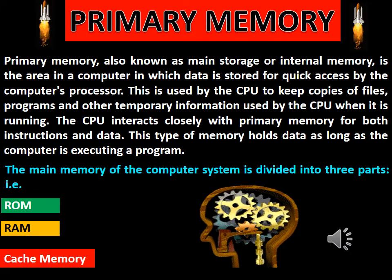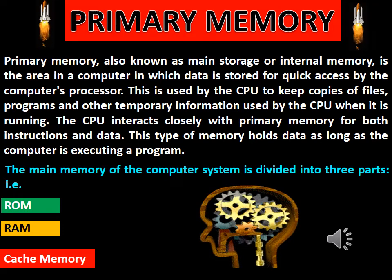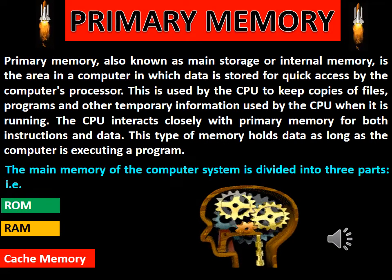Primary memory, also known as main storage or internal memory, is the area in a computer in which data is stored for quick access by the computer's processor. It is used by the CPU to keep copies of files, programs and other temporary information when it is running. The CPU interacts closely with primary memory for both instructions and data. This type of memory holds data as long as the computer is executing a program. The main memory of a computer system is divided into three parts: ROM, RAM and cache memory.